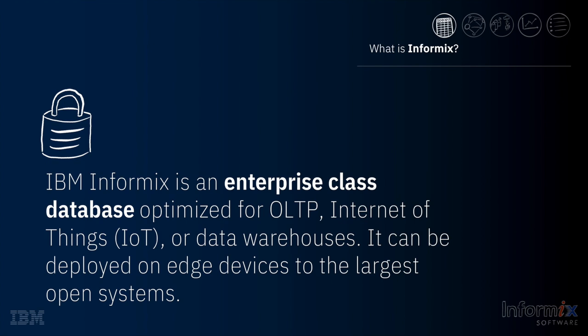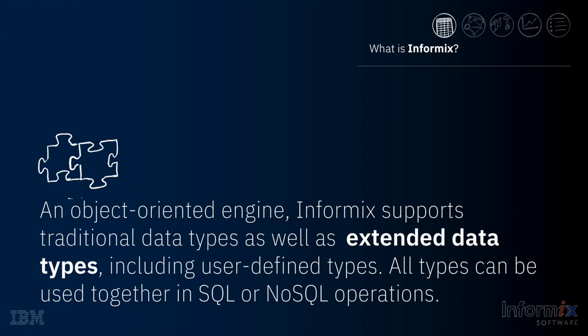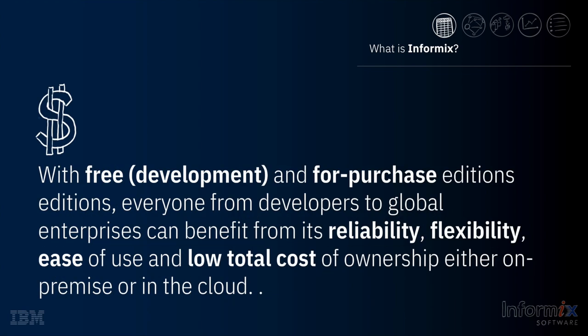Informix is a highly available and scalable database server with technologies that distinguish it from other products. It has a unique architecture that allows it to run on systems as large as z/Linux mainframes to network edge devices as small as Raspberry Pi. Informix supports traditional SQL data types like characters and numerics, as well as non-traditional extended types like JSON, hierarchical, time-oriented, spatial, and custom data types. One of the world's largest airlines uses a custom data type inside Informix to calculate ticket prices for their flights in real time.